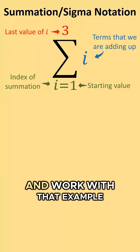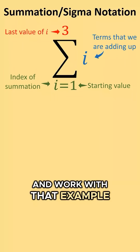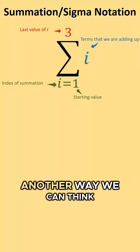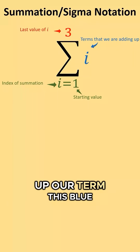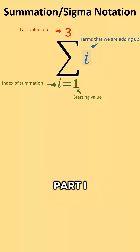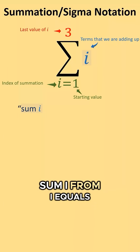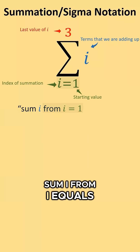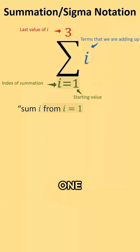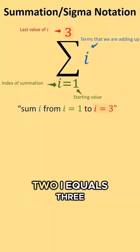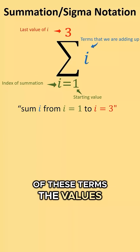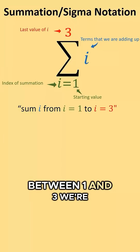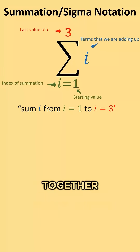So let's go ahead and work with that example and write out what it represents. Another way we can think of this is we're summing up our term — this blue part i — so we're going to sum i from i equals 1 to i equals 3. And for each one of these terms, the values between 1 and 3, we're going to be adding them together.